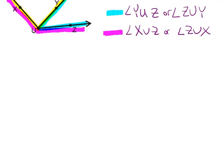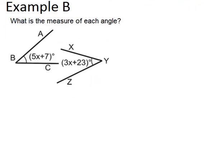Going to example B. What is the measure of each angle? Now it's marked right here with the arc that these two angles are congruent because they each have one angle mark. So that means if the two angles are congruent, we can set up an equation. 5X plus 7 has to equal 3X plus 23 because the two angles have to be the same.